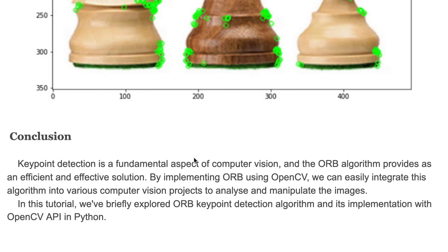In this tutorial, we briefly explored the ORB keypoint detection algorithm and its implementation with the OpenCV API in Python. Keypoint detection is a fundamental aspect of computer vision, and the ORB algorithm provides an efficient and effective solution. By implementing ORB using OpenCV, we can easily integrate this algorithm into various computer vision projects to analyze and manipulate images.